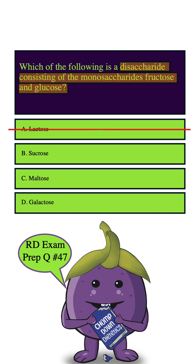How about B? Sucrose is a disaccharide, and it does consist of the monosaccharides fructose and glucose. It's commonly known as table sugar. So this is definitely the correct answer, but just for good practice, we're going to go through the other answer choices as well. So let's bank this answer and move on to C.